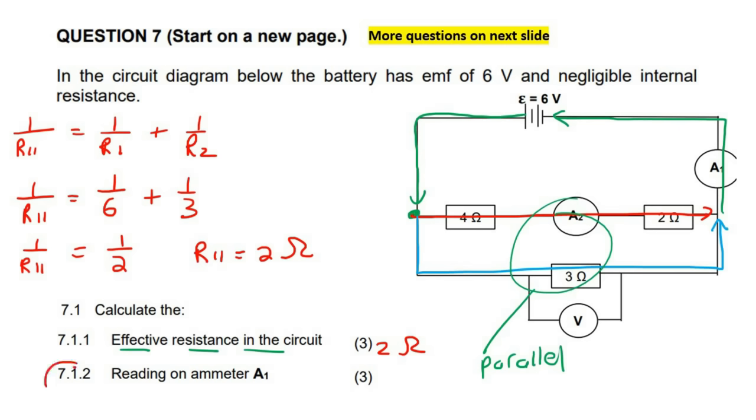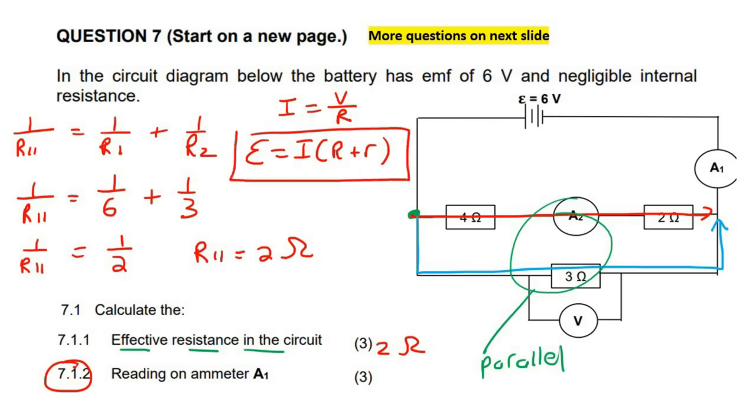This next one says, what is the reading on ammeter A1? So we know the formula I = V/R. You could also use EMF = I × R + more R. And so I think a lot of learners would be more comfortable with that. Remember that there is no internal resistance in the battery, so you could just use this formula.